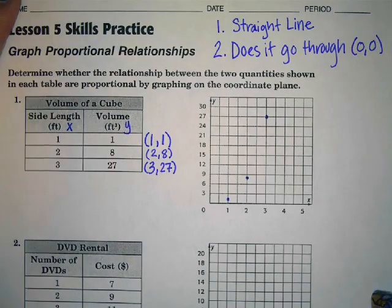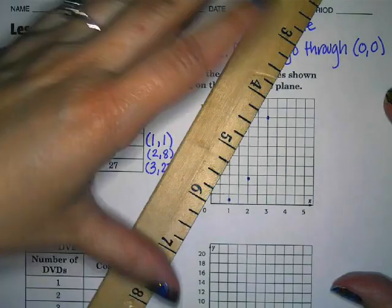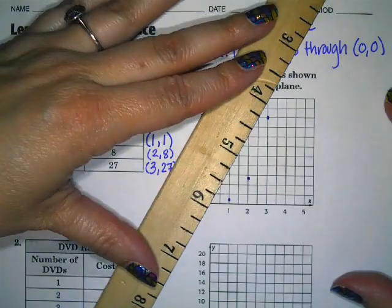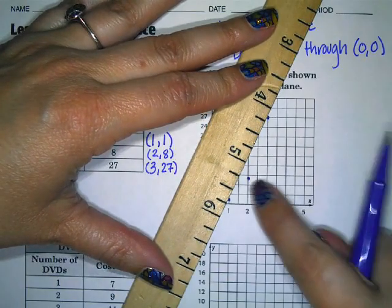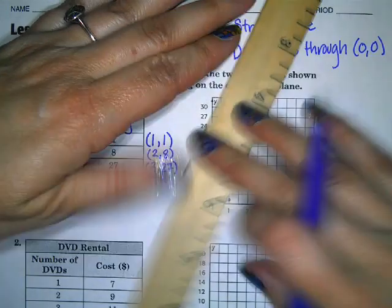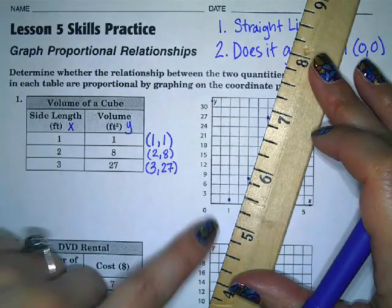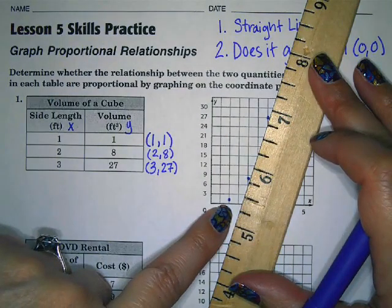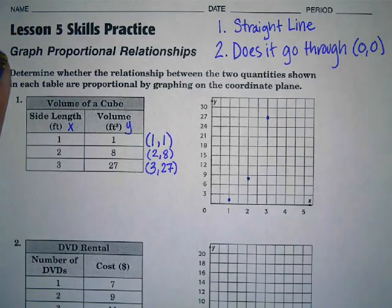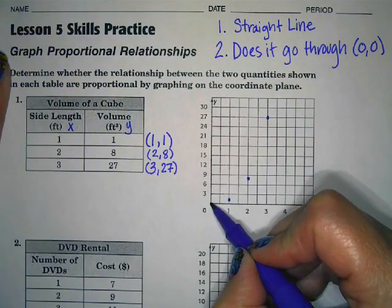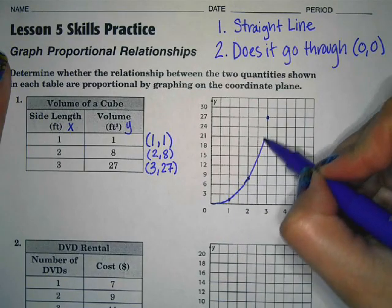Now if you have a straight edge, you can kind of line this up and see if it's a straight line or not. So notice that if I line up my first and my third point, my second point is not on that line. So same thing if I line up my second and third, my first one's not on the line. So this graph is not a straight line. It is a curved line. Now it probably does start at zero zero. So this is a curve, kind of curves up this way.